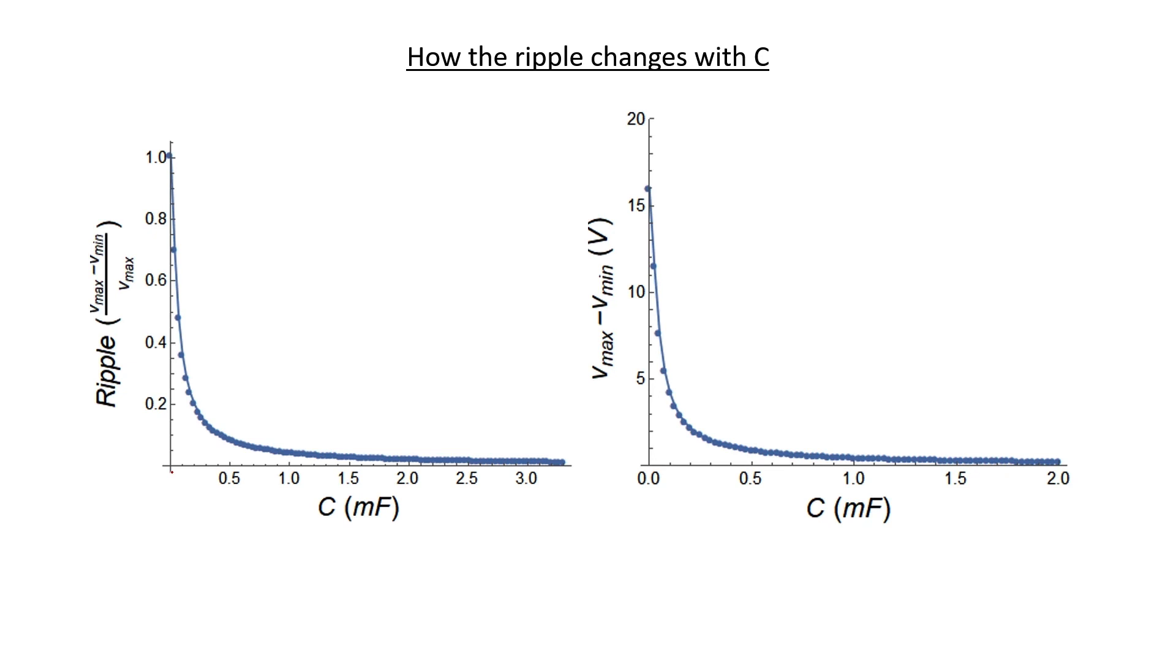If you watched my previous video, you might recall that I gave a rather simple expression that you can use to estimate what the ripple would be. I here is the maximum current that you would expect to flow in the circuit. F is the line frequency, and then C is the capacitor that you're choosing.